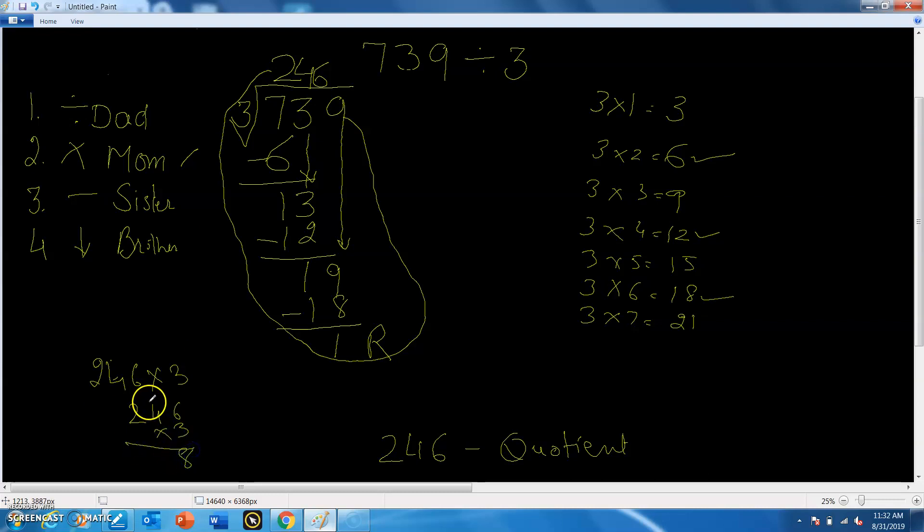6 times 3 is 18, write 1. 4 times 3 is 12, 1, 13. 2 times 3 is 6, 1, 7. It comes 738. And we know we are coming to this number. This is one remainder.